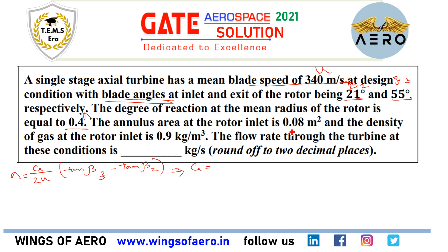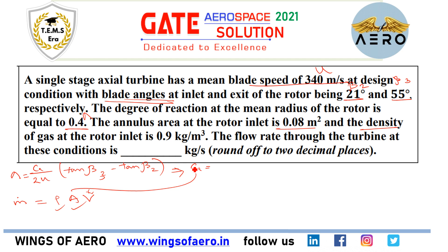The aim is to find out the mass flow rate. The formula is: mass flow rate = ρ × A × V. Area A is given, density ρ is given. Now for V, you need to calculate Ca. So substitute the value of Ca into the formula and get the answer. Find out the answer and let me know.